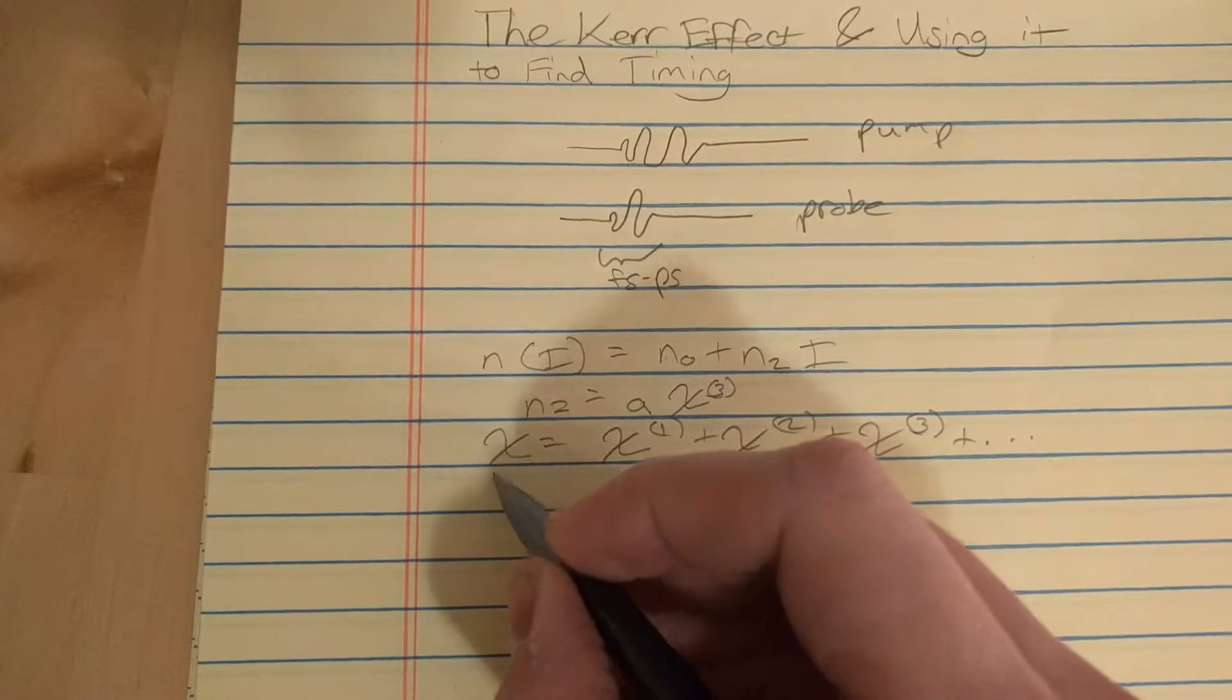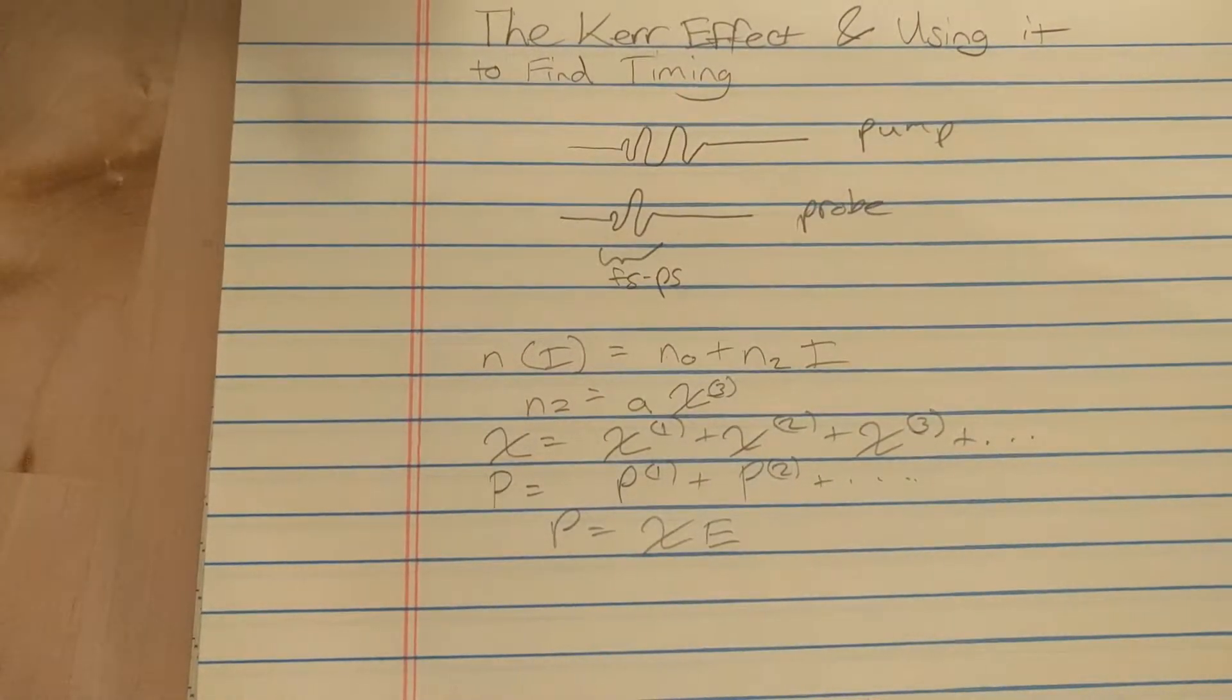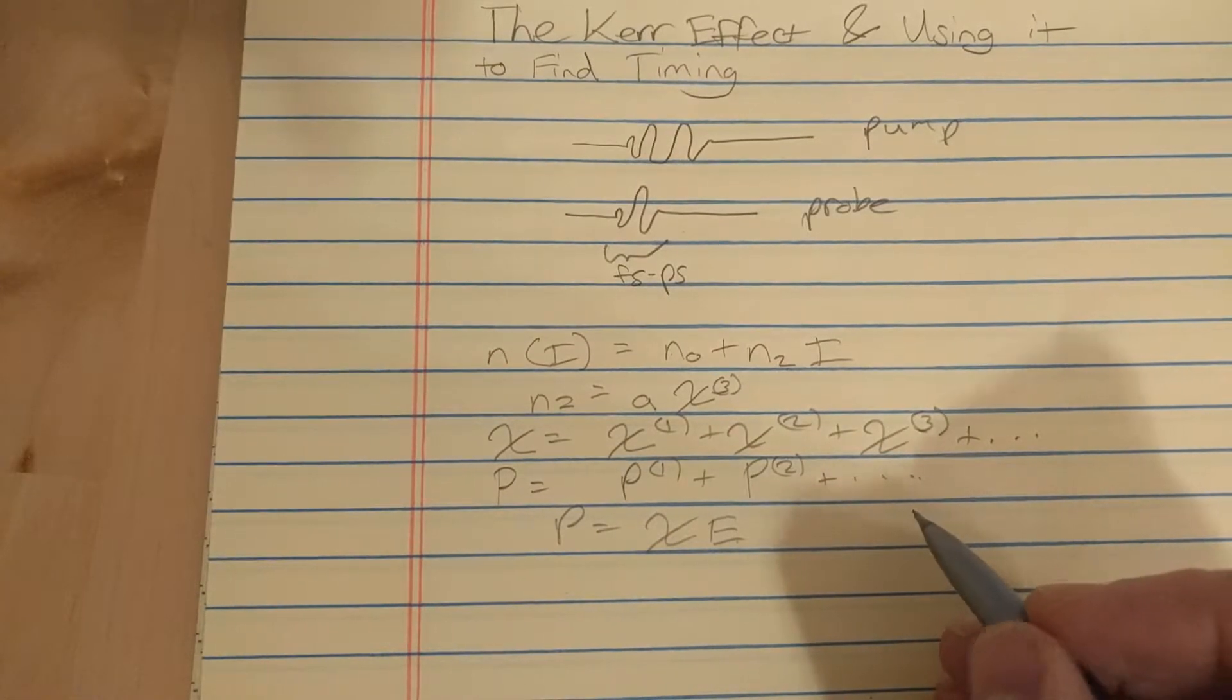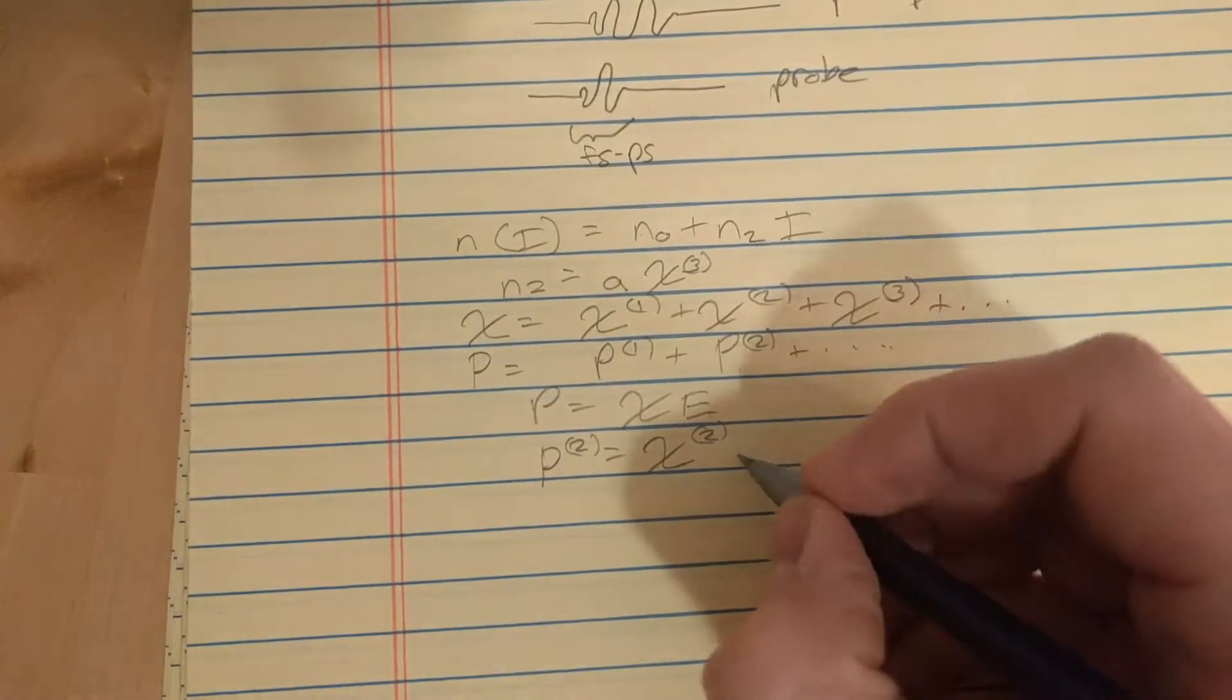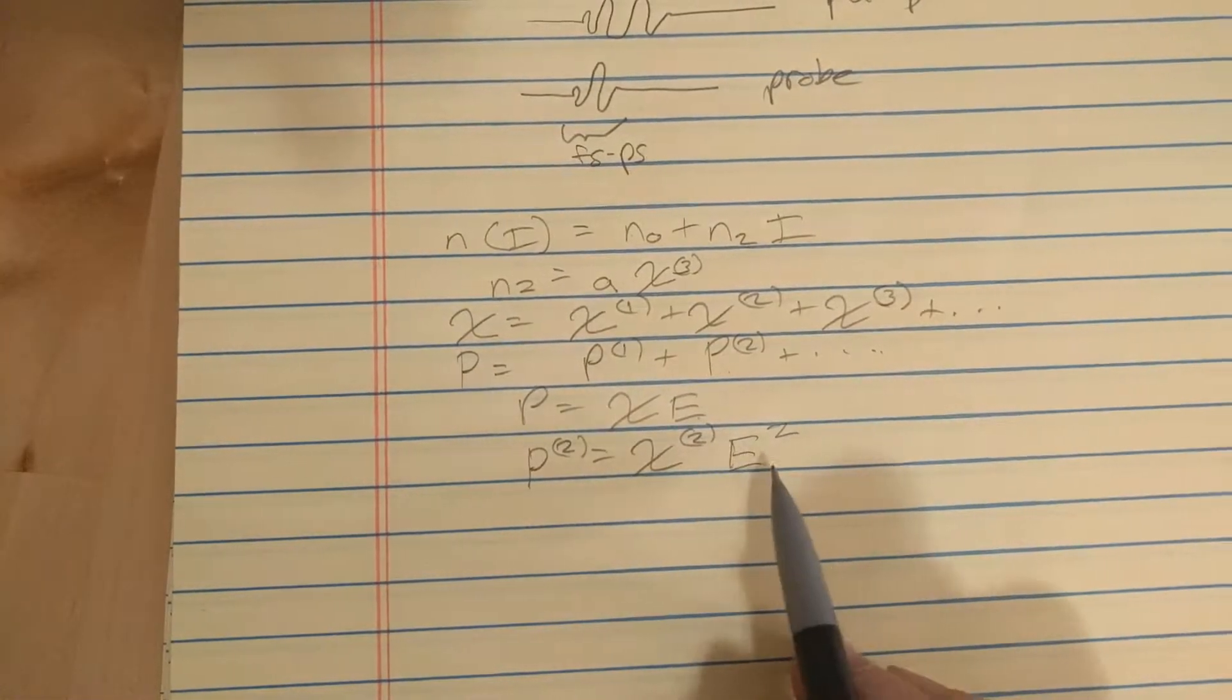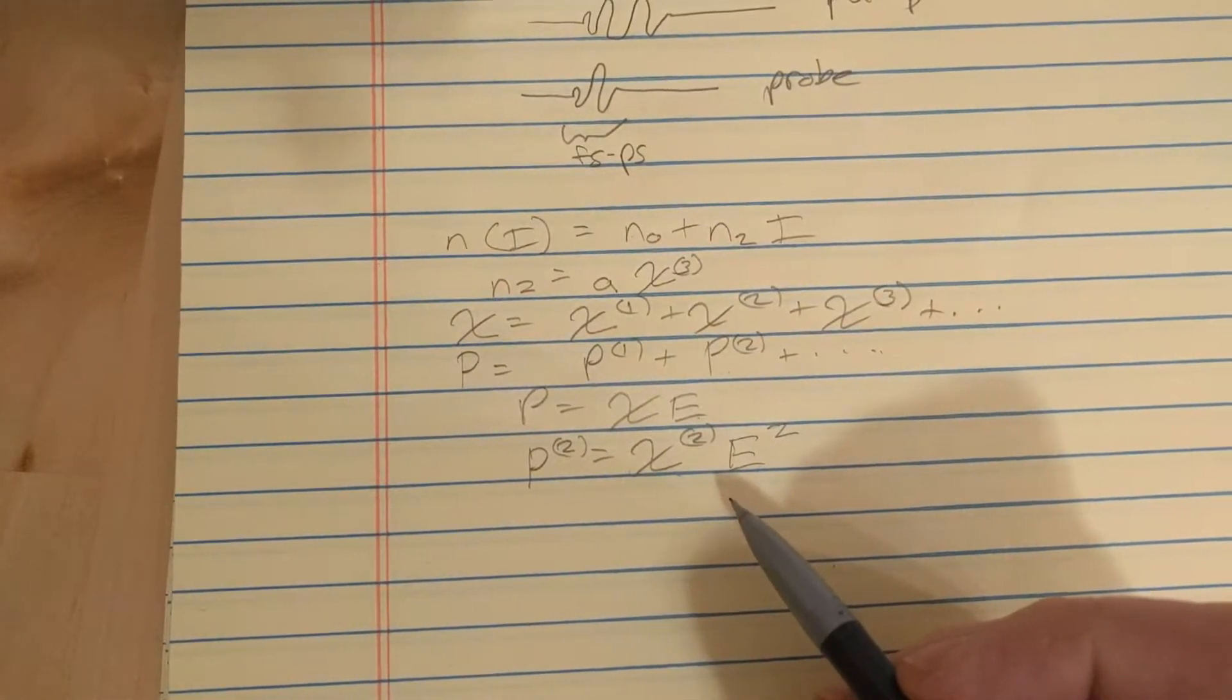The same thing can be done with the polarization. And the polarization is essentially chi times the electric field. So let's take P2, for example. P2 is going to equal chi2 times the electric field squared. Okay, but that's not that important. I just wanted to remind you what chi was if you forgot. It's essentially how easy is it to induce an electric field in your material.